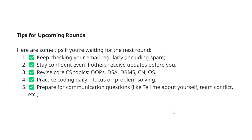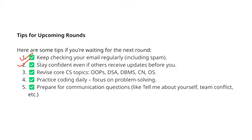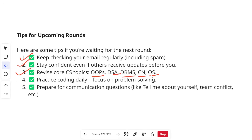Some final tips for students appearing for the next rounds. First, keep checking your emails regularly, including your spam folders, because sometimes emails go to spam. Stay confident even if others have received updates before you, as updates come in phases — it is very likely your friend received updates sooner but you are still waiting. Revise core CS topics like OOPs, DSA, DBMS, Computer Networks, and Operating Systems, which are very important for your upcoming interview rounds.